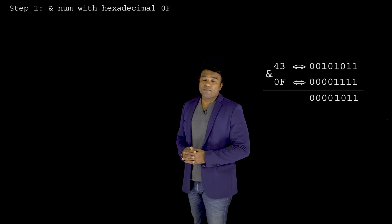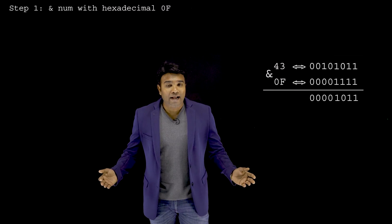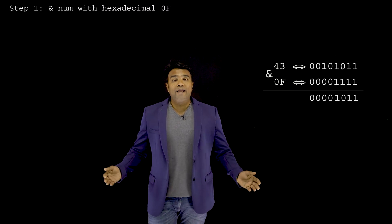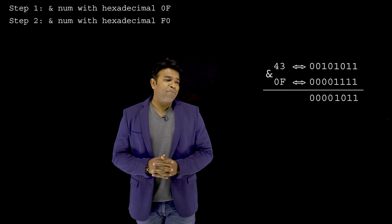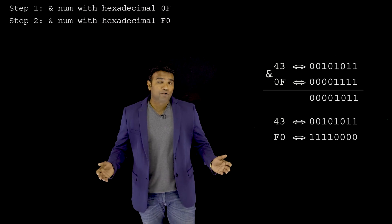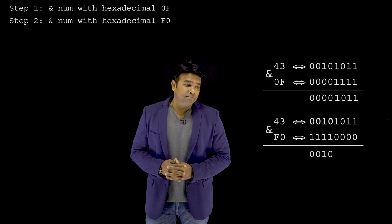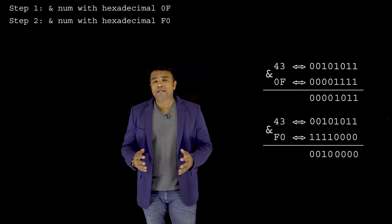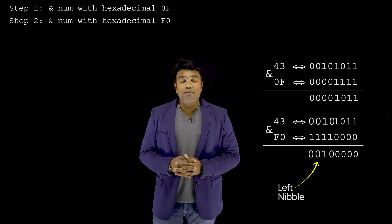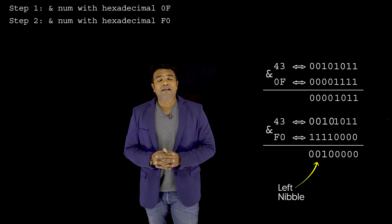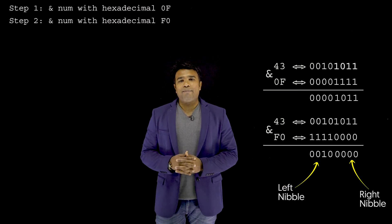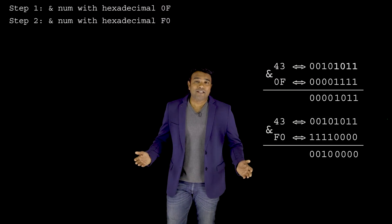In the second step, I will extract the left nibble. I'm again going to use the AND operator, but this time I'm ANDing my data with hexadecimal F0. This is my data 43, this is hexadecimal F0. Applying the AND operation, all the bits of the left nibble are preserved, and all the bits of the right nibble become zeros — successfully extracting the left nibble.